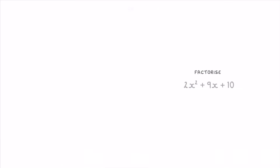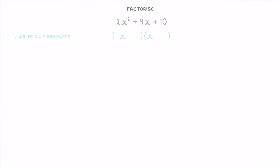To see how they work, let's have a go at factorizing 2x² + 9x + 10. Like with normal quadratics, the first thing you want to do is write out your brackets, but this time we need to put a 2 in front of the first x, because these two x terms have to multiply together to make the 2x² term. So one of them is going to have to be 2x and the other one just x.